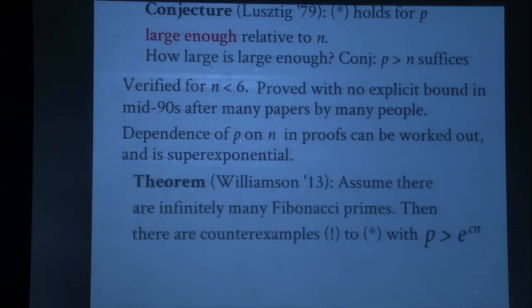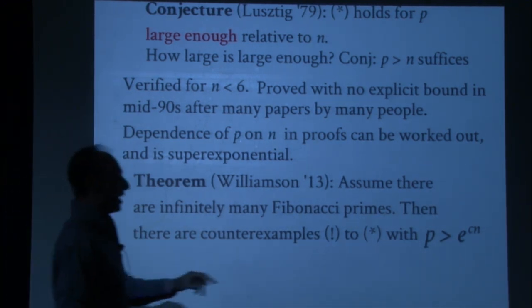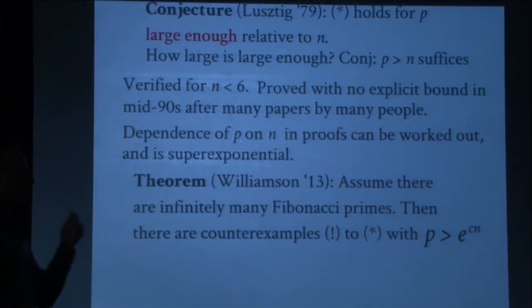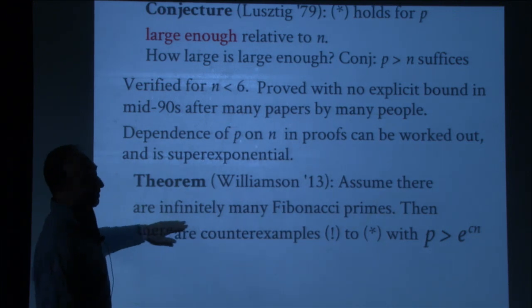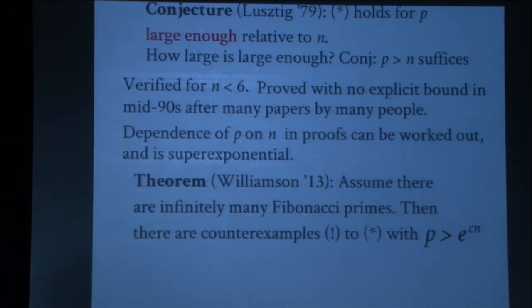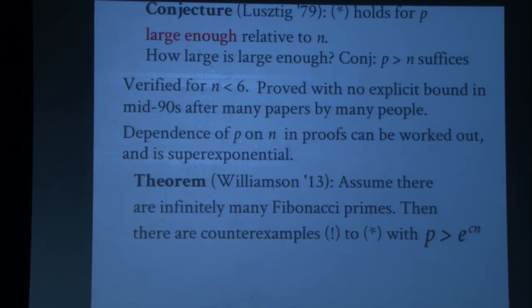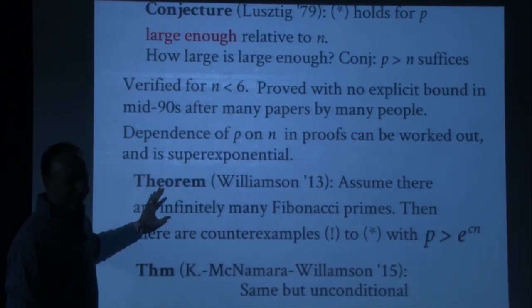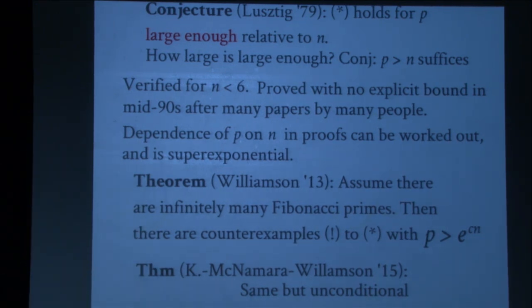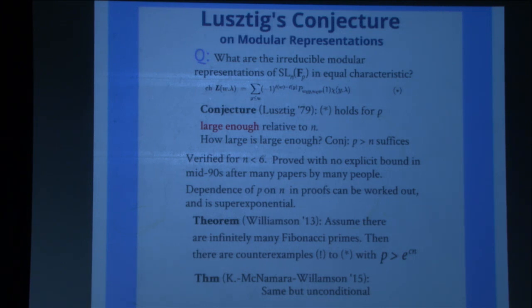A couple of years ago came a huge shock: Jordy Williamson constructed counterexamples to this conjecture for primes that are exponentially large in the Coxeter number, under the assumption that there are infinitely many Fibonacci primes. Peter McNamara, Jordy, and I were able to remove this assumption — not by proving infinitely many Fibonacci primes, but by circumventing it through thin orbits.